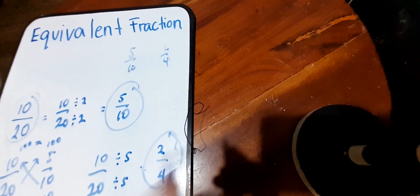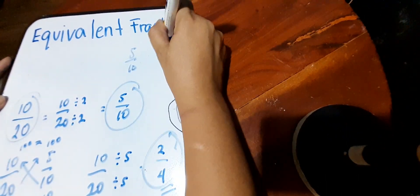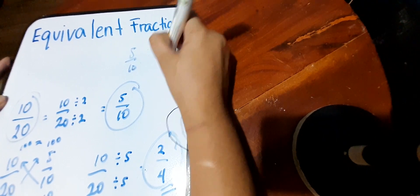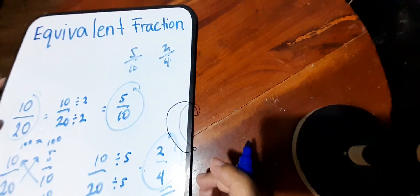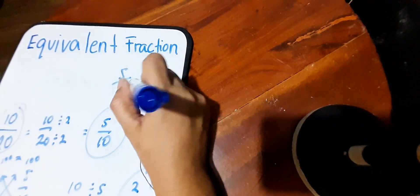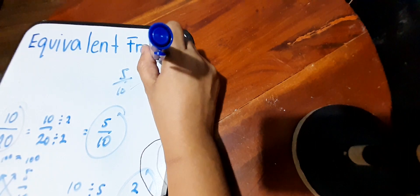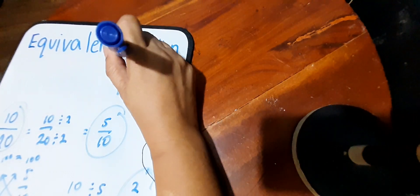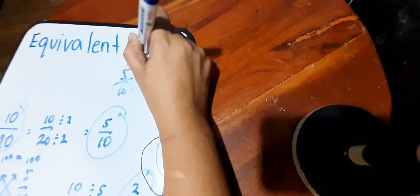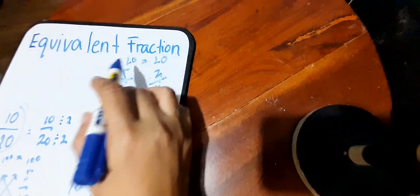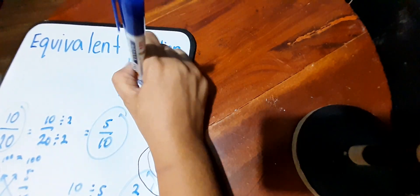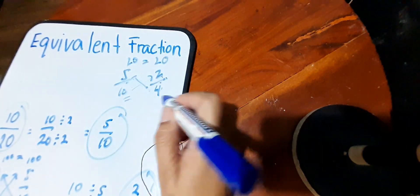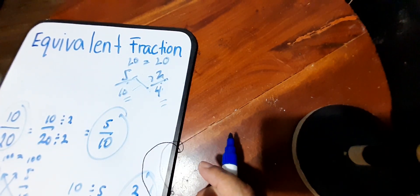Even if you try to check five-tenths and two-fourths, let's cross multiply again. Ten times two is twenty, and five times four is also twenty. Twenty is equal to twenty — when we cross multiply them, therefore we say that five-tenths and two-fourths is also an equivalent fraction.